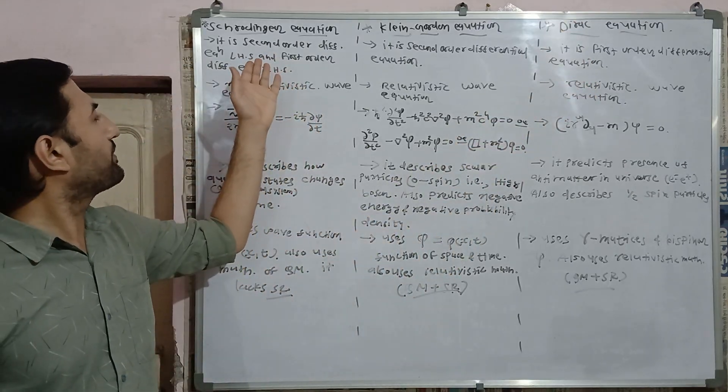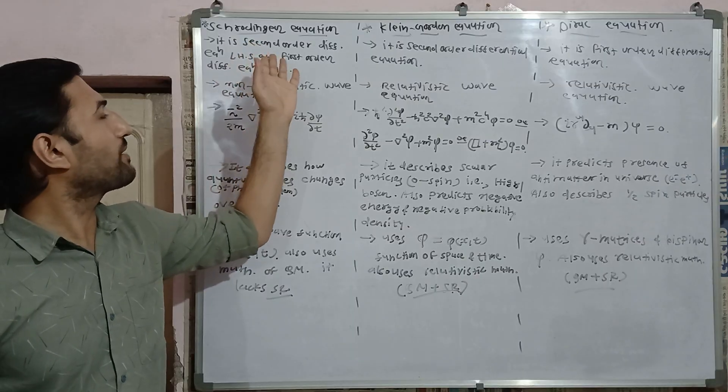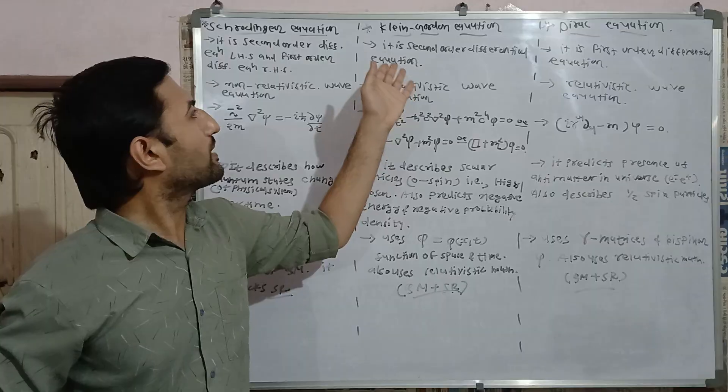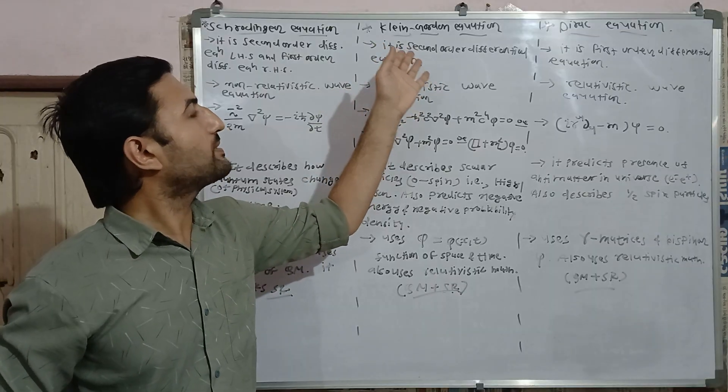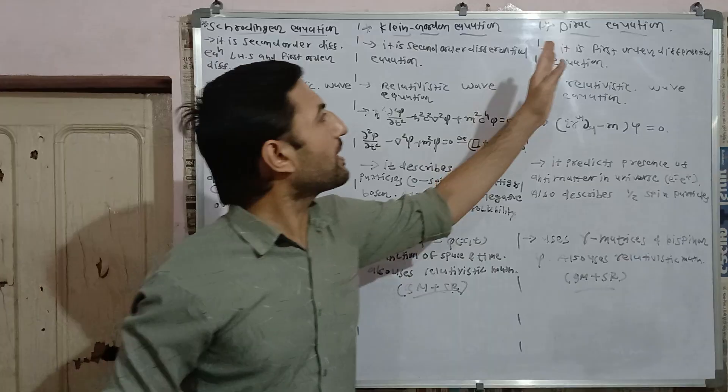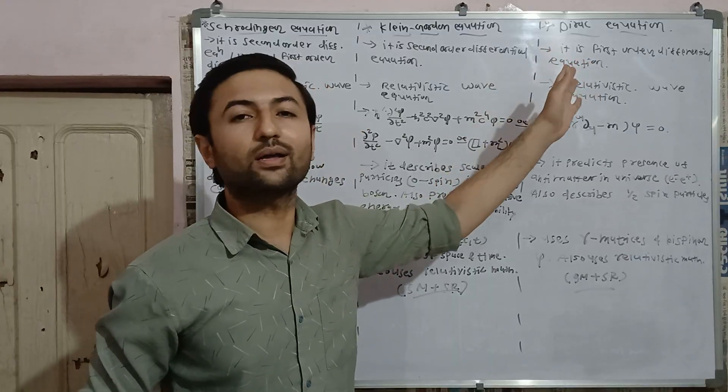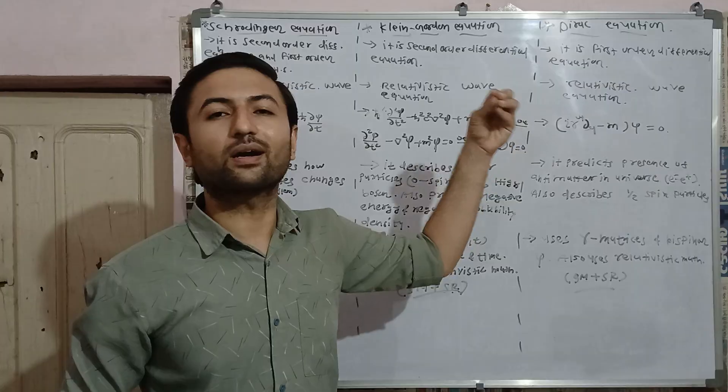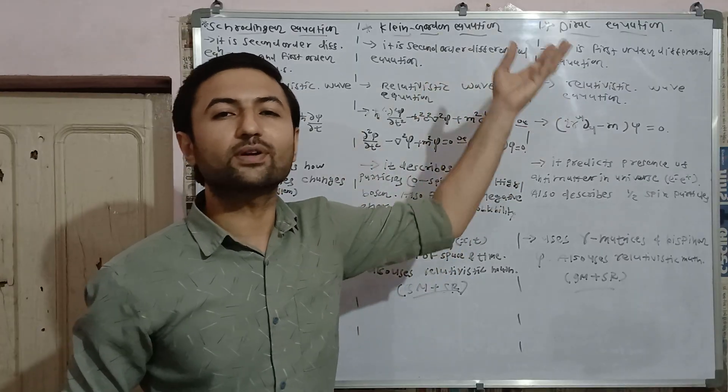Because of this feature of Schrodinger equation, it is a bit difficult to handle mathematically. While Klein-Gordon equation is easy to handle in comparison to Schrodinger equation and Dirac equation is easy to handle though it has more new mathematical operators or mathematical operations.